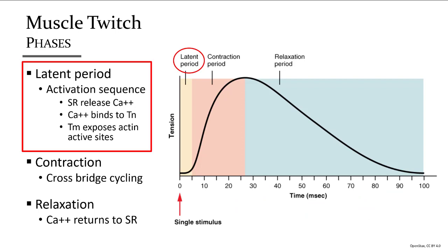A twitch is a single stimulus that takes the muscle from stimulated to contracted to relaxed, and it has three phases. The latent period encompasses everything discussed about activating the sarcolemma from the nerve — going down the T-tubules to the sarcoplasmic reticulum, releasing calcium, binding to troponin, and moving tropomyosin over. This is a lot of things that happen before the muscle even contracts.